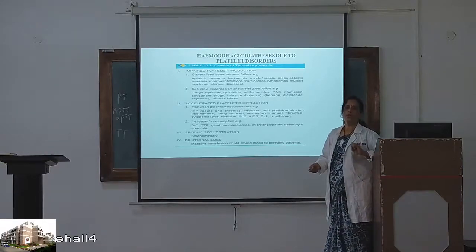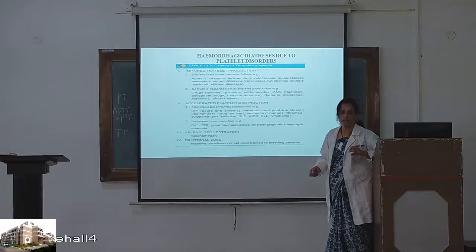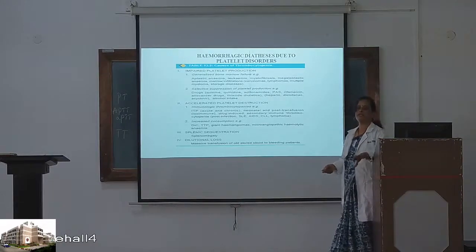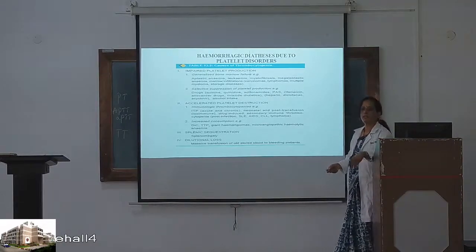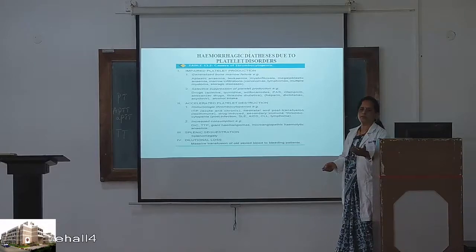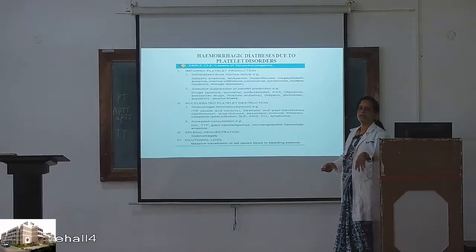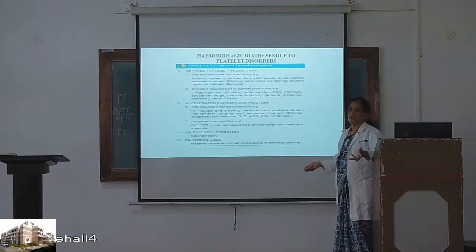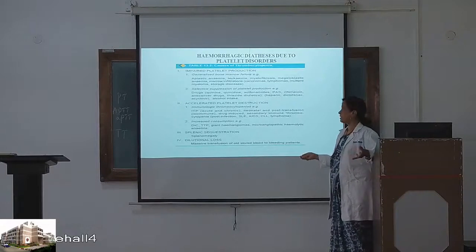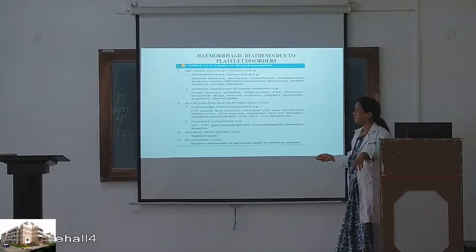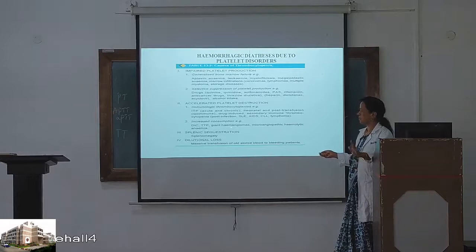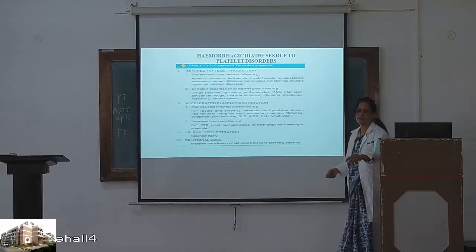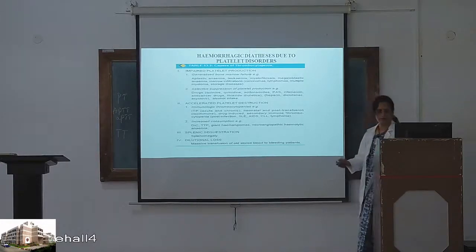Diagnosis of ITP is done by bone marrow aspiration. The bone marrow shows a normal number of megakaryocytes — the precursors from which platelets are produced — but everything is normal yet the platelets are decreased. That is ITP. Then there is increased consumption as in DIC, TTP, sequestration, and dilution or massive transfusion.